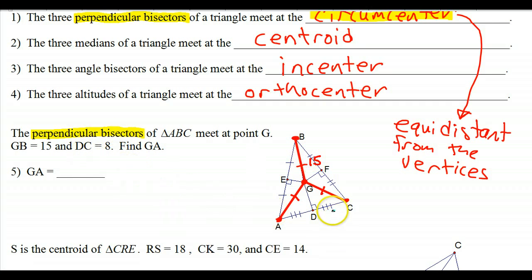DC is supposed to be 8. So here's DC, from here to here, and it is 8. Find GA. Well, GA is another one of those distances to the vertices. So all three should be the same. If one of them is 15, the other one is definitely going to be 15.